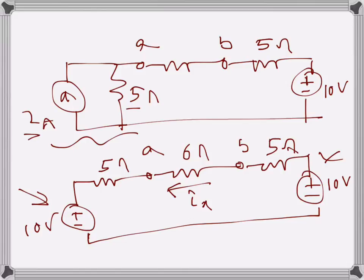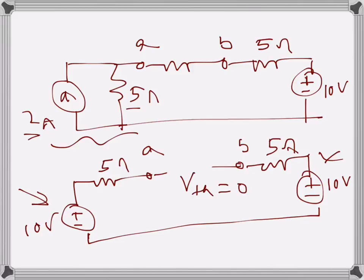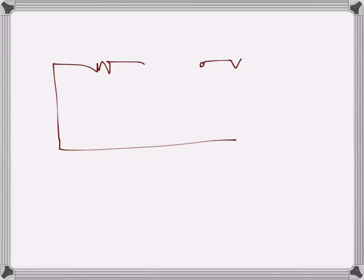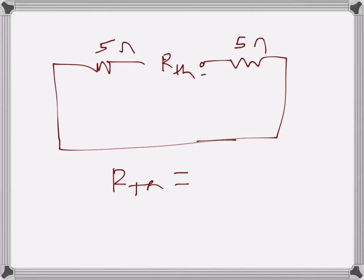To find the Thevenin's equivalent, I remove the load and find the open circuit voltage. Since the two equal voltage sources are opposing, the open circuit voltage Vth is essentially zero. For the Thevenin resistance seen from terminals a and b, the voltage sources are short-circuited, giving 5 ohms and 5 ohms in series, so the resultant Thevenin resistance is 5 + 5 = 10 ohms.